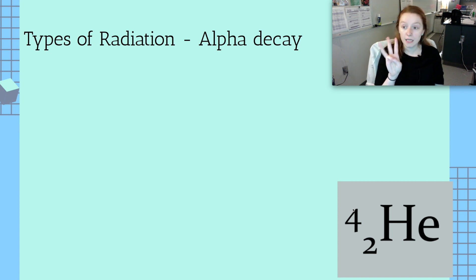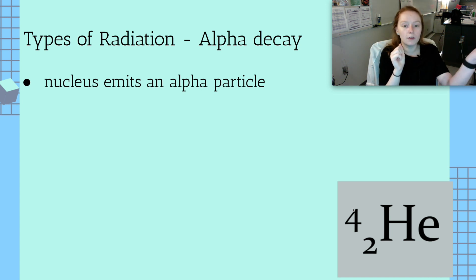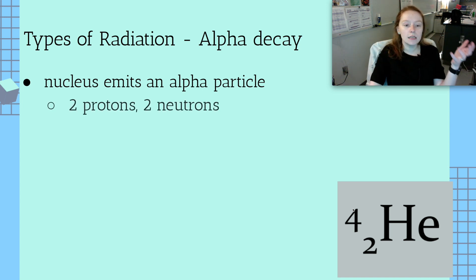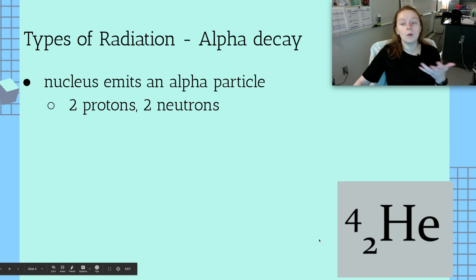All right, there's three types of radiation, and the first is alpha decay. Alpha decay is where you have a nucleus that will shoot out an alpha particle, and an alpha particle is two protons plus two neutrons, which is just a helium nucleus. So when we show this in a chemical formula, which I will be showing you guys later, it looks like this right here. In a formula, we'll show alpha decay as this 4, 2, He.